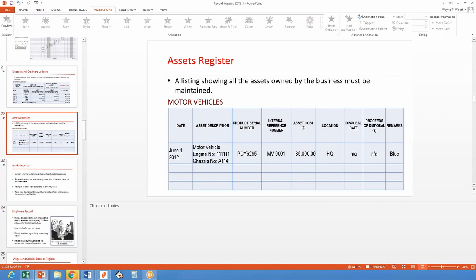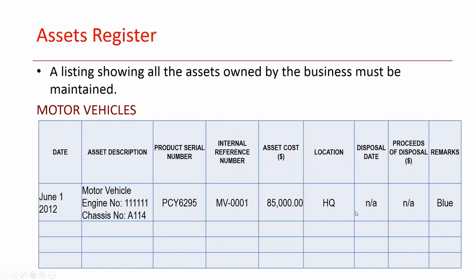These assets should be recorded on an index card. You can get a number of index cards and note: I have a motor vehicle, the date it was bought, the description of the vehicle, engine number, chassis number, serial number, and most importantly the price. Ideally, you should photocopy the purchase invoice for the asset and attach it to the index card so you can quickly find the invoice if you need to.